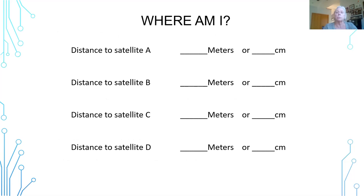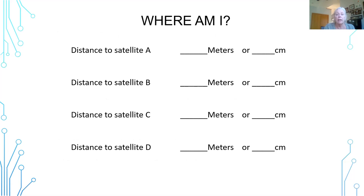You would give the students a sheet asking for their distance to satellite A in meters, and then what that would be converted to in centimeters. This mathematics exercise is one of the reasons I would stick to middle school and high school, unless you want to give them the answers. If you want to do this with younger students and not deal with all the mathematics, you can just give them the distances to satellites A, B, C, and D.